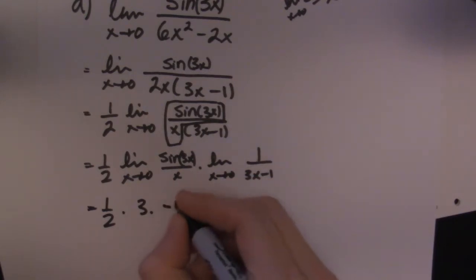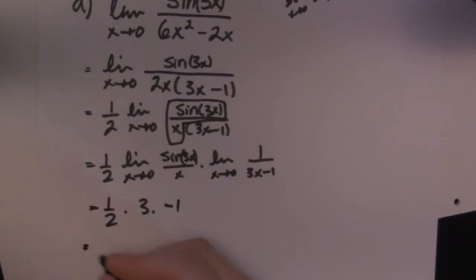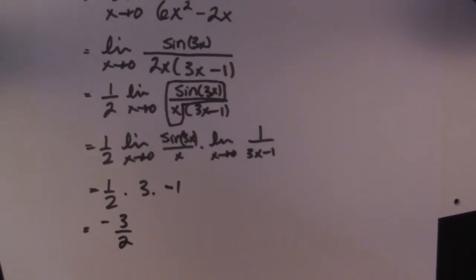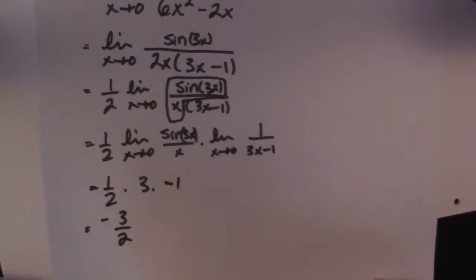so times minus 1, and then so I have negative 3 over 2. So there it is guys, an example of when you have to factor to be able to solve a trig limit. Alright, let's try another one.